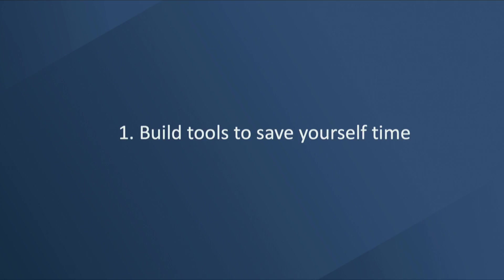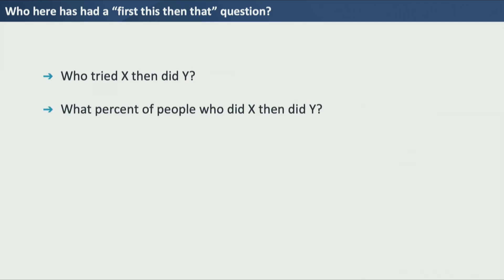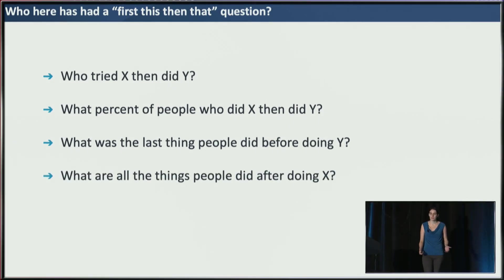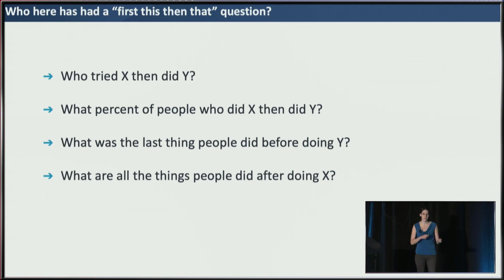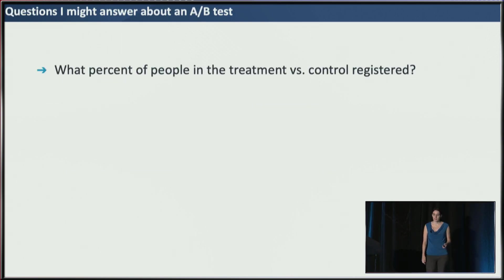The first lesson is: build tools to save yourself time. Who here has ever had a 'first this, then that' question? Something like: who tried X, then did Y? What percent of people who did X then did Y? What was the last thing people did before doing Y? Or what were all the things people did after doing X? This is the type of question I would ask in A-B testing — say, what percentage of the people in the treatment versus control registered after starting the experiment? So I'd have experiment starts and registration.